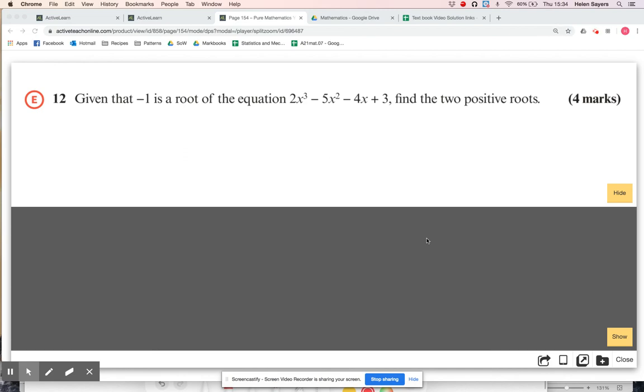We're looking at Mixed Exercise 7 from the First Year Core textbook, question 12, which is an exam question. I'm given a cubic, and I'm told that x equals minus one is a root. It doesn't say I have to show that it is, so I can just assume that works. I don't need to use factor theorem and check it, and I'm asked to find the other two positive roots.